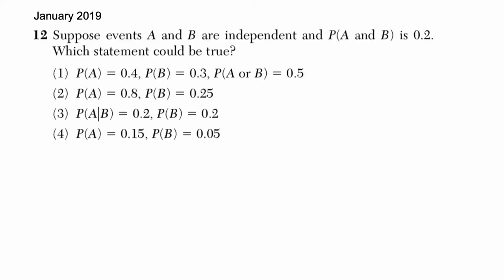Take a moment to read this problem, and then press play when you're ready to solve it with me. Notice first of all that we have these two events A and B that are independent. We're also given that the probability of A and B happening is 0.2.